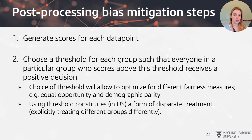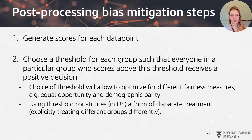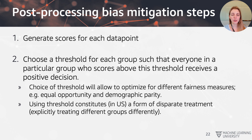The choice of threshold allows us to optimize for different fairness measures — for example, equal opportunity and demographic parity. However, there's a caveat: using different thresholds for different groups actually constitutes disparate treatment in the United States, because we're explicitly treating different groups differently. So this might not be a method that can be deployed depending on your domain.